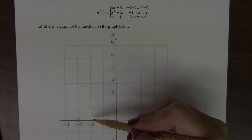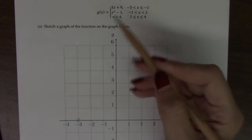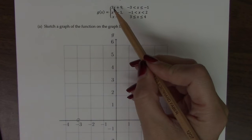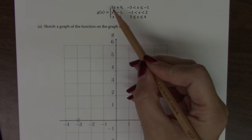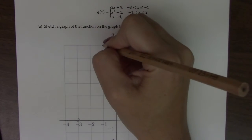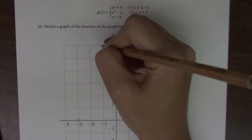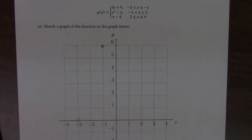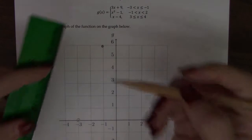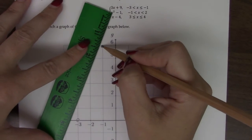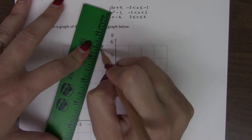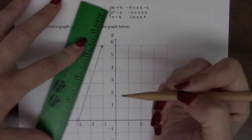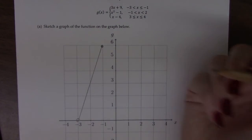So negative 1 is included, so I have a solid circle here. I could have used some intermediary points if I wanted to, but since this is just a line, all I need is 2 points on the line to draw this. So I have a little mini ruler. A folded piece of paper works great as a straight edge, but I'm just going to connect my two lines. So there is the first piece of this equation.